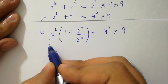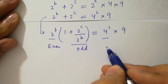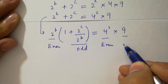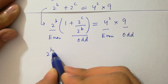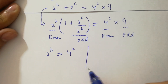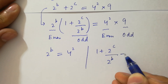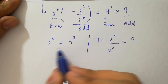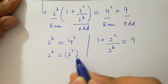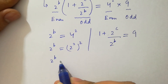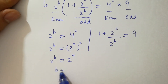Here, 2 to the power b is an even number, so 1 plus 2 to the power c over 2 to the power b equals 9. This is odd. 4 squared is even, and 9 is odd. So by comparing both sides we have 2 to the power b equal to 4 squared, and 1 plus 2 to the power c over 2 to the power b equal to 9. Since 4 squared equals 2 to the power 2, whole squared, equals 2 to the power 4, the value of b equals 4.